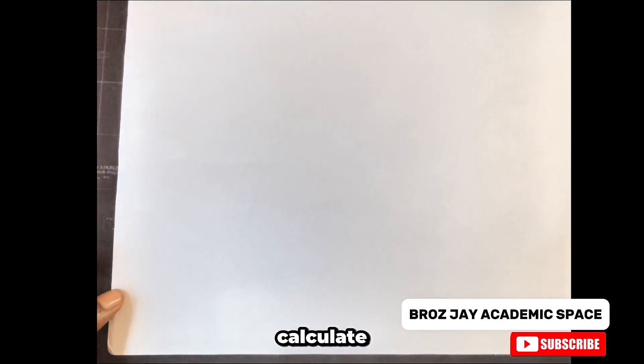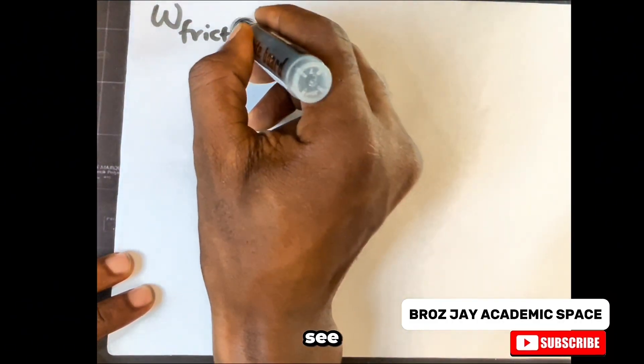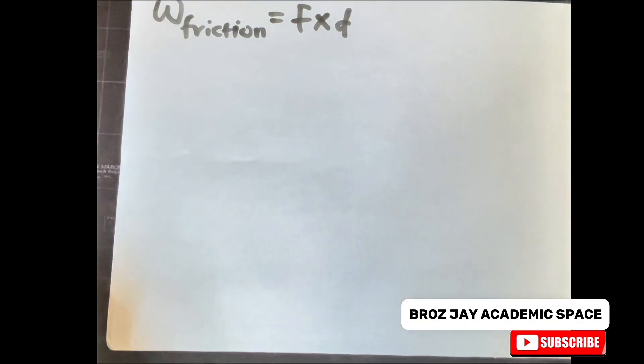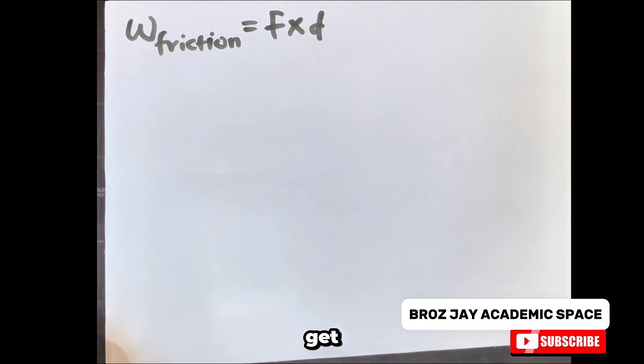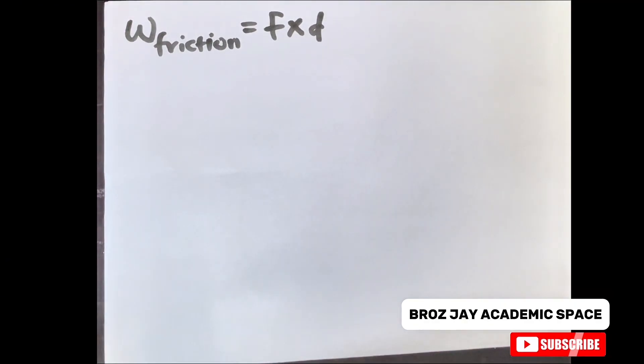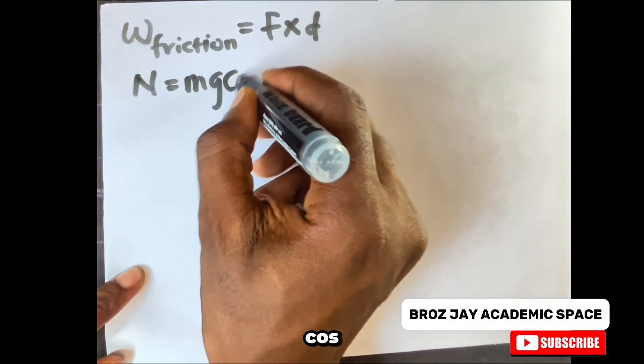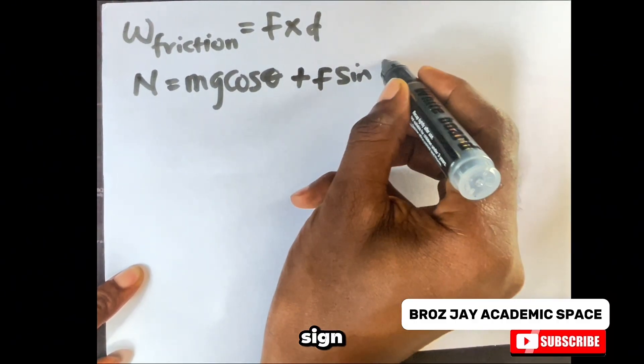Let's calculate for B, work done against friction. Before you solve work done against friction, which is F times D, you must find the normal force and the frictional force. Combining these two, that's how to get the work done against friction. The normal force is given as N equals Mg cos theta plus F sine theta.